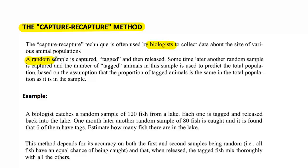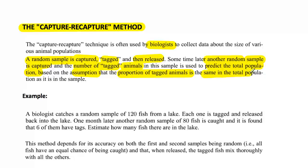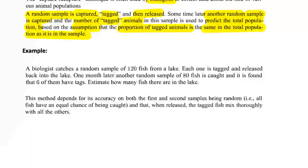What happens is a random sample is first captured and tagged, and then they're let go. Some time later, another random sample is captured, and the number of tagged animals in this second sample is used to predict the total population. It's based on a very important assumption: that the proportion of tagged animals is the same in the total population as in the sample.